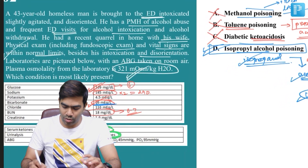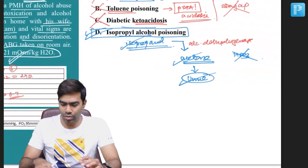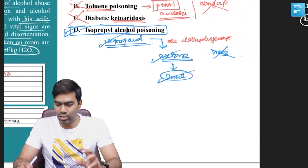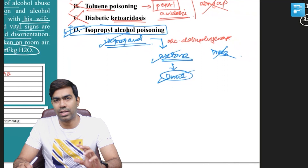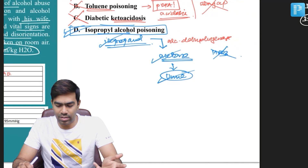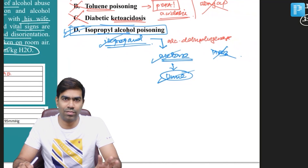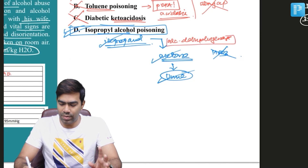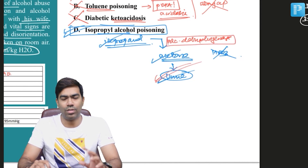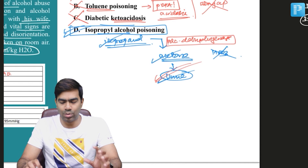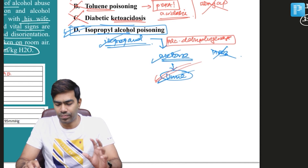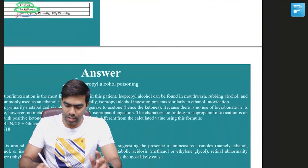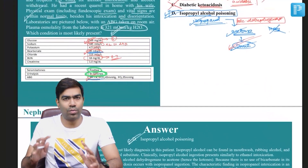Because no bicarbonate is utilized, the bicarbonate remains normal and the patient will not have metabolic acidosis. The patient's pH is also normal at 7.4 — there is no form of acidosis. Isopropyl alcohol poisoning can also result in significant CNS symptoms and renal failure. This is a classic case of isopropanol poisoning, and the right answer for this question is option B.